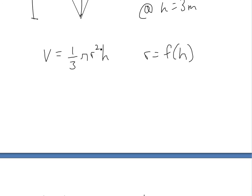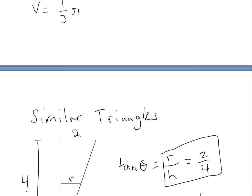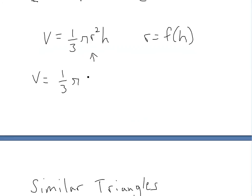And then we could actually plug that inside of this one right here. So we'll get V equals 1/3 π. Now we put that 1/2 h. So we'll get h/2 squared times h.